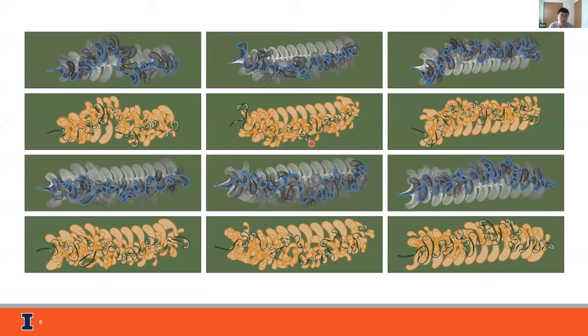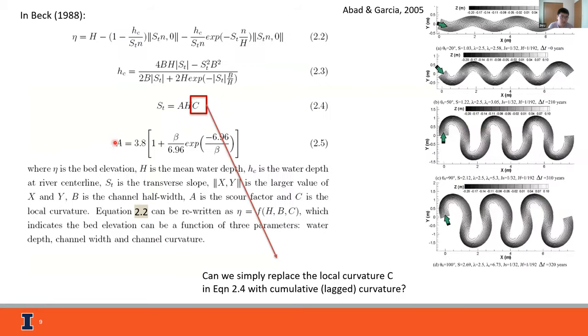If we run the same setup for multiple times, the first and third rows are the centerline migration trajectories, and the second and fourth rows are the point bar evolution trajectories.